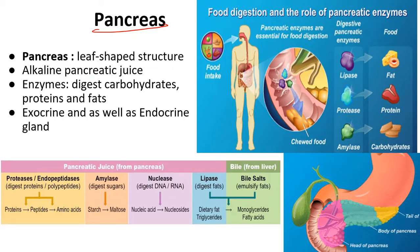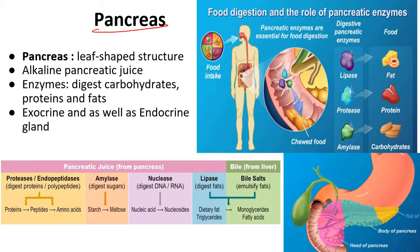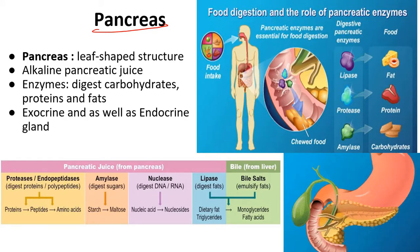Looking at the location of the pancreas: this is your esophagus, here you have a J-shaped organ that is the stomach, and below the stomach you have a leaf-shaped structure. This leaf-shaped structure is known as the pancreas.